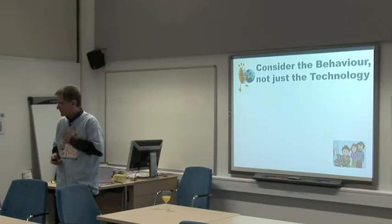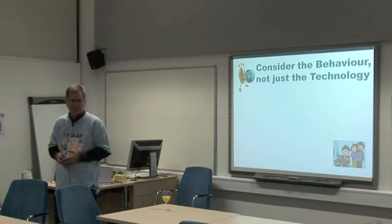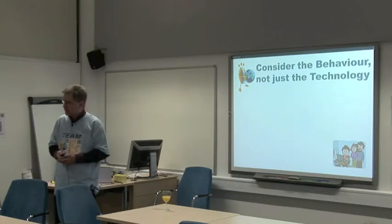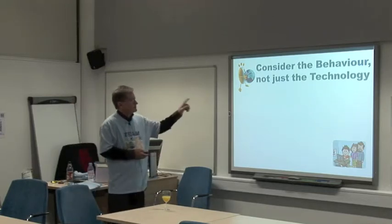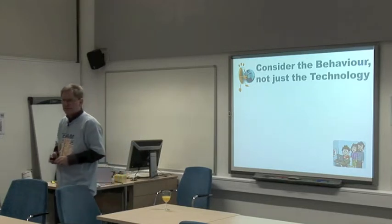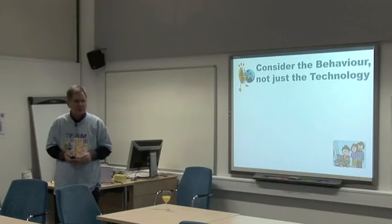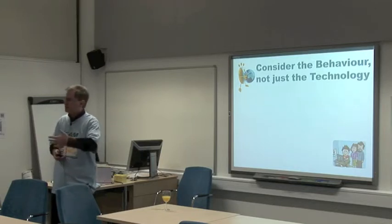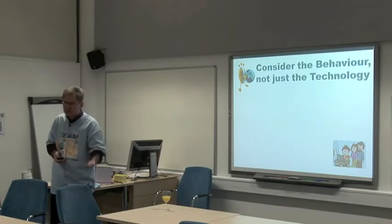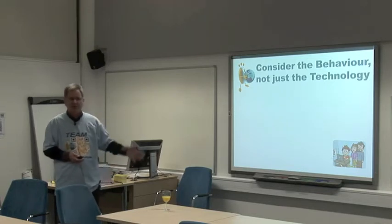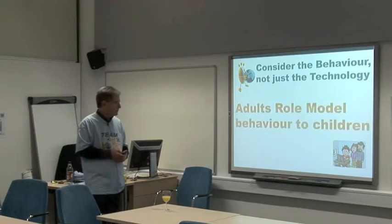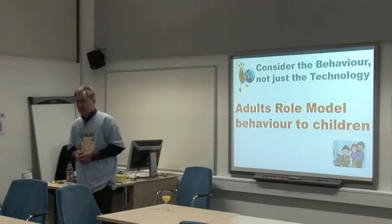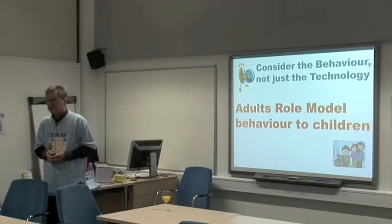I'm a child protection social worker responsible in the Plymouth Safeguard Insurance Board for ensuring that all agencies, including the university, adhere to child protection procedures. We've got a huge problem: the vast majority of people responsible for assessing the risk to a child actually don't look at the internet. They don't consider the child's use of the internet. But there's more than that — they don't look at the family's use of the internet in assessing the risk to the child.